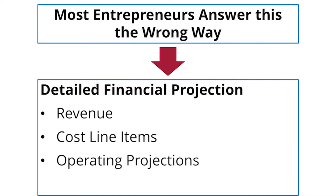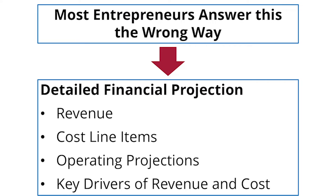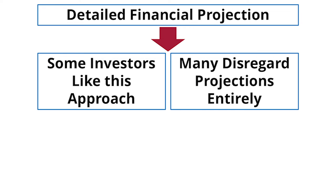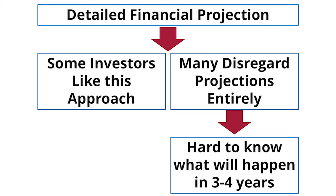Sometimes founders will go in and say, here's the number of people we're going to hire in month six and then month ten, and work it through. Some investors like that. Other investors don't pay any attention to those kinds of spreadsheets because they know that at the beginning, at the stage you're at right now, it's really hard to know what expenses you're going to have three or four years out, or what your revenues are going to be three or four years out. So why put together a financial or profit projection at all?